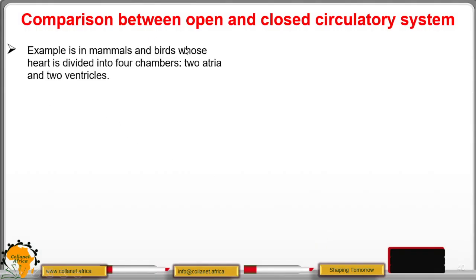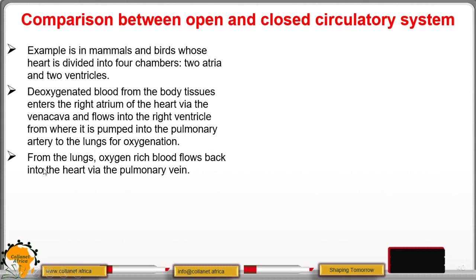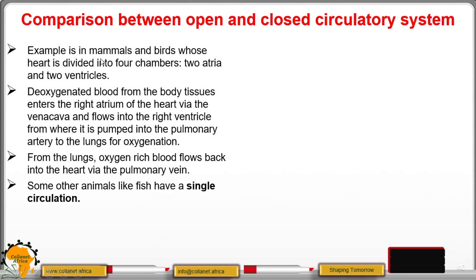In mammals and birds, the heart is divided into four chambers — two auricles and two ventricles. Deoxygenated blood from the body tissues enters the right auricle through the vena cava and flows into the right ventricle, from where it is pumped into the pulmonary artery to the lungs for oxygenation. Oxygen-rich blood then flows back to the heart through the pulmonary vein. This is double circulation.